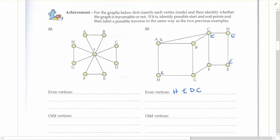Now looking at A, it's got three, so that's an odd one. B has three, it's odd. G has three, it's odd. F has three, it's odd.